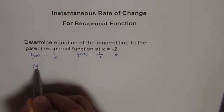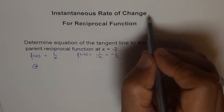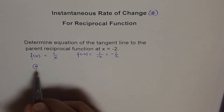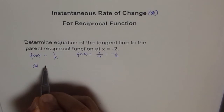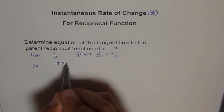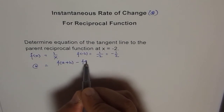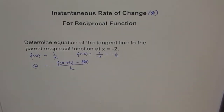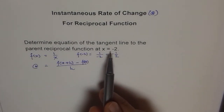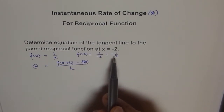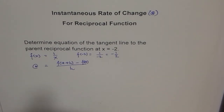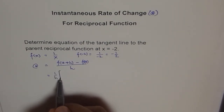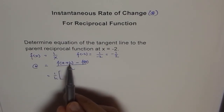The instantaneous rate of change at any point in general is given as the limit of f of a plus h minus f of a, all over h. In our case, we have a point x equals minus 2, and the value at minus 2 is minus one half. So I will write 1 over h times the bracket f of a plus h minus f of a.